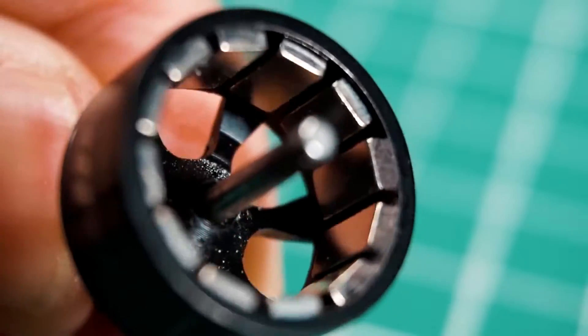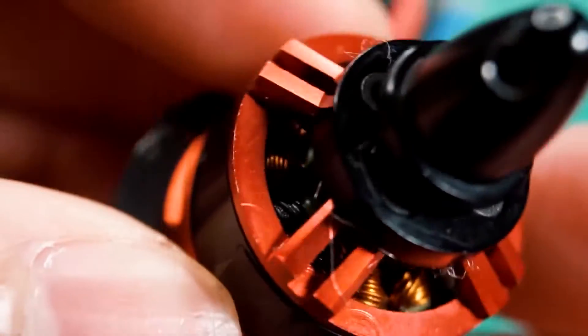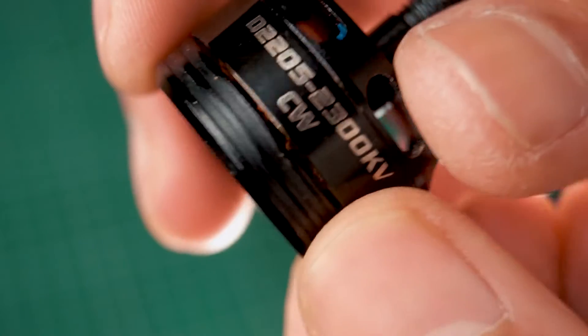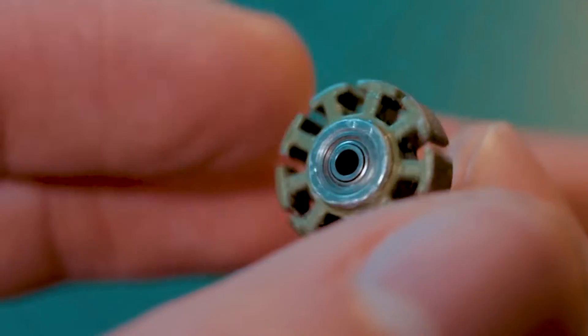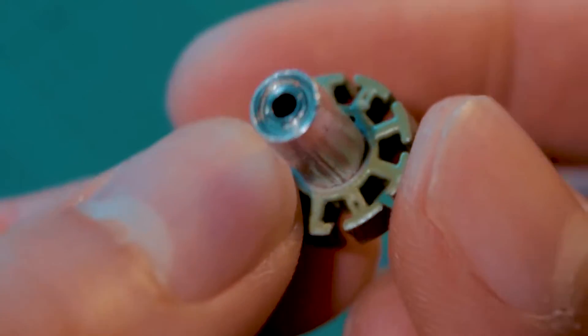So right now what you are looking at are the different motors I have taken apart to do the rewinding. Now the bigger motors are easier to work with than the smaller ones. The smaller ones are very small, so to wind these little pieces it's a challenge.